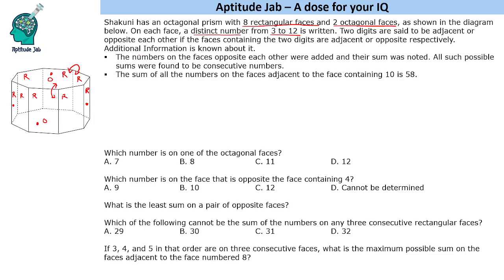It is given that the numbers on the faces opposite each other were added and their sum was noted. All such sums were found to be consecutive numbers. And the sum of all the numbers on the faces adjacent to the face containing 10 is 58.